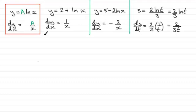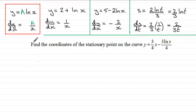Now here's an example using this idea of differentiating the natural log of x. It's about finding the coordinates of the stationary point on the curve y equals three quarters x minus 3 times the natural log of x, all over 4. If you'd like to have a go at this, do pause the video, then come back when you're ready and check your solution against mine.